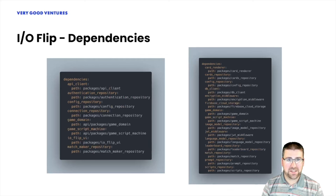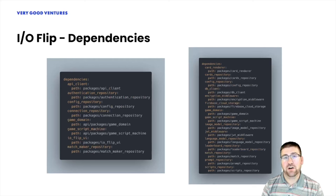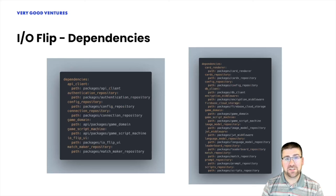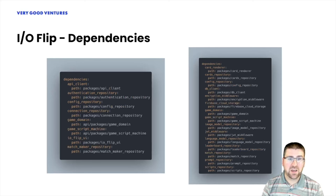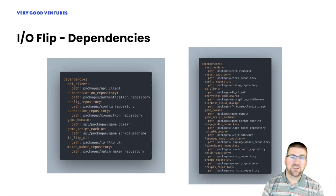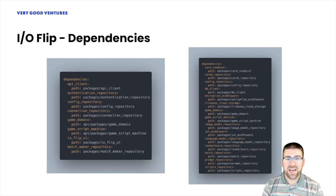The screenshots shown are cut-down versions of the pubspec files for both the application and the API server side, with basic third-party dependencies removed so we can focus on the local packages used on each side. While we typically follow this pattern of local packages for our layered architecture, it also makes it very easy to share code between the frontend and backend. If you look closely at these pubspec files, you'll see a handful of packages listed in both — including the config repository, game domain, and script machine — only the pieces truly needed on both sides. With this setup, we no longer need multiple PRs, reviews, and deployments just to test and release changes. We're able to catch breaking changes with unit testing, and those annoying sync issues are now a thing of the past.